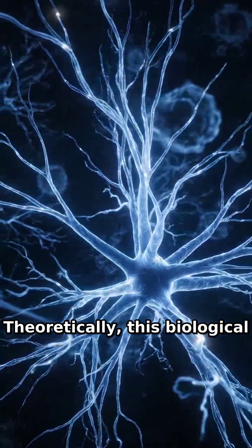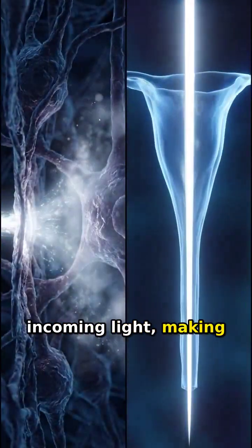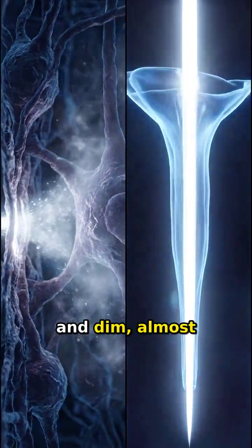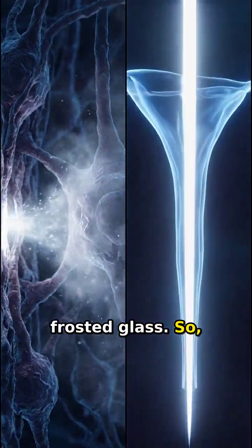Theoretically, this biological clutter should scatter incoming light, making your vision blurry and dim, almost like looking through frosted glass.